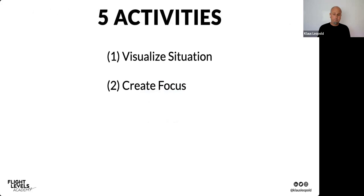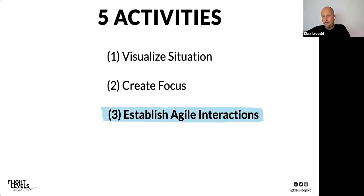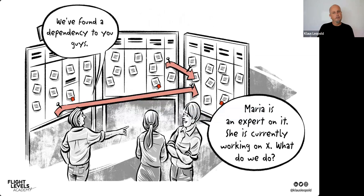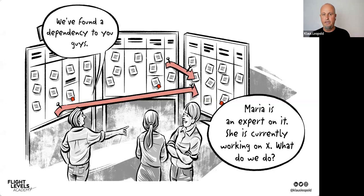Activity number three: organizations establish agile interactions. This means the right people talk about the right stuff at the right time, independent of the org chart. None of the visual or physical artifacts change anything by themselves — a board just shows you the situation. You need human beings who make sense of what they're seeing. Establishing agile interactions across teams and the entire organization is activity number three.